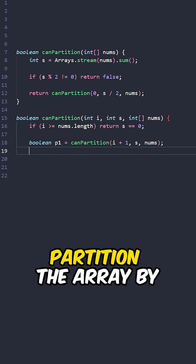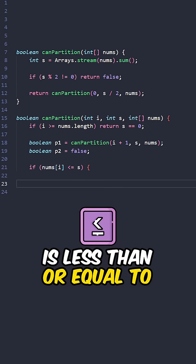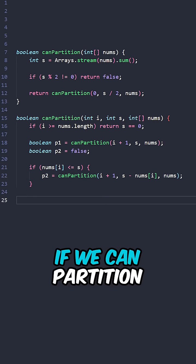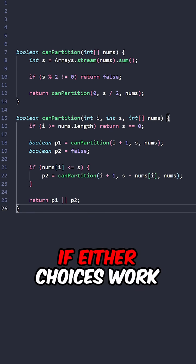Recursively check if we can partition the array by skipping the current element. If the current element is less than or equal to the sum, recursively check if we can partition the array by including the element. Return true if either choice works.